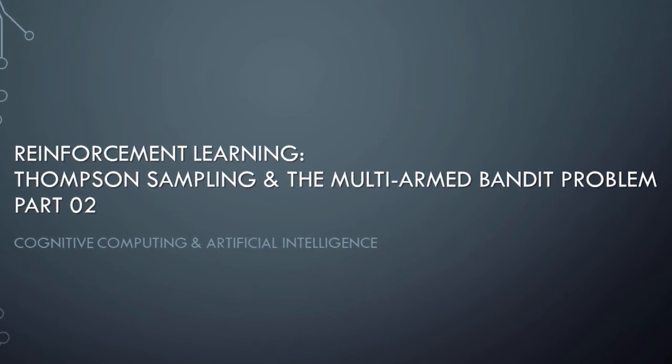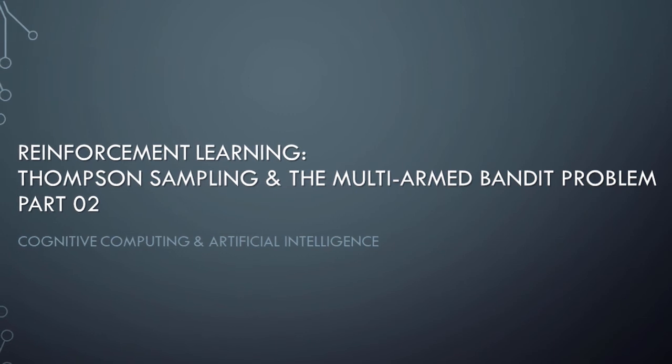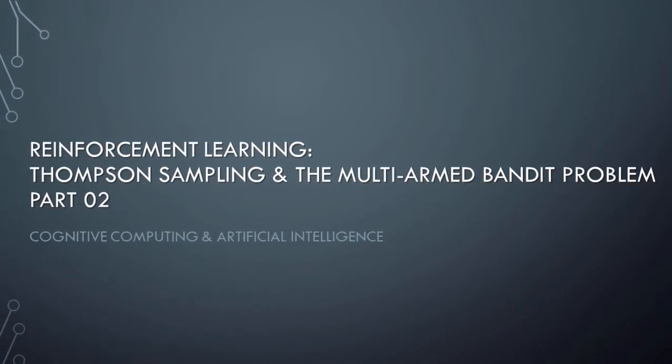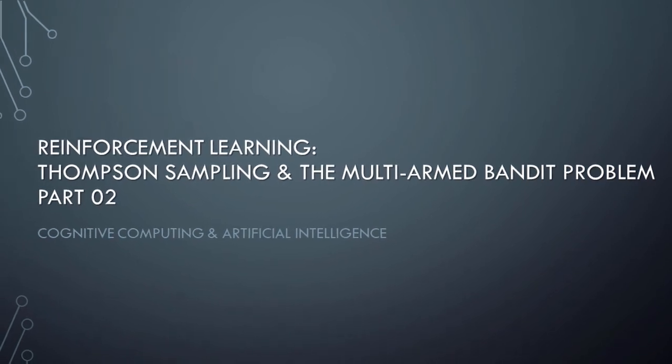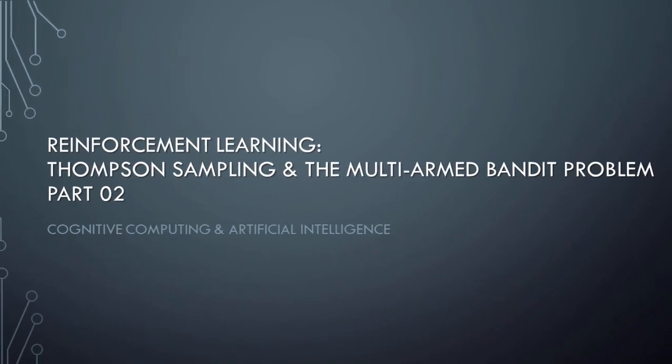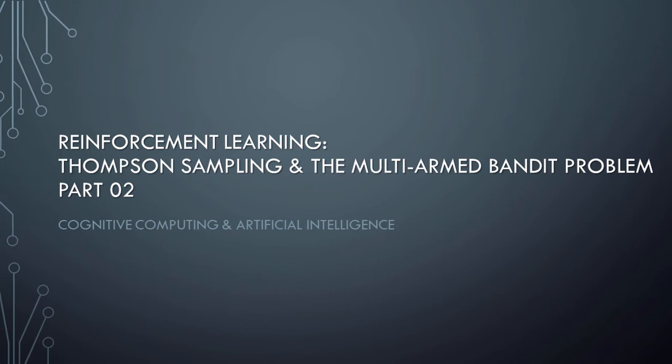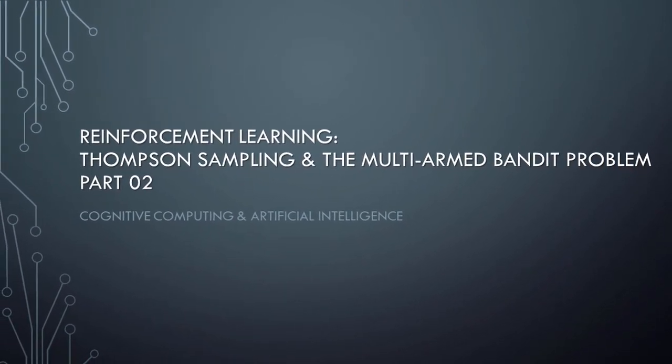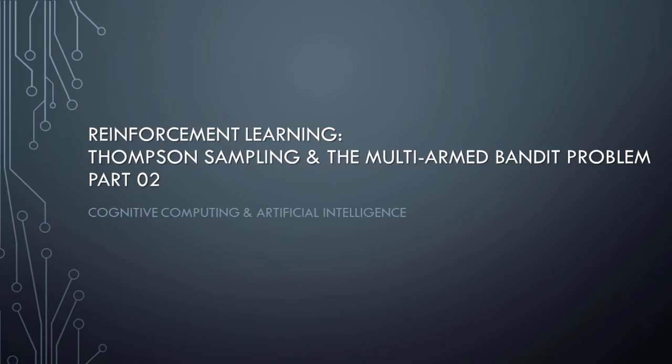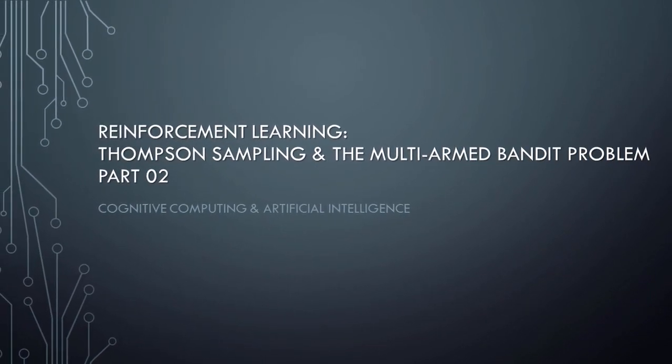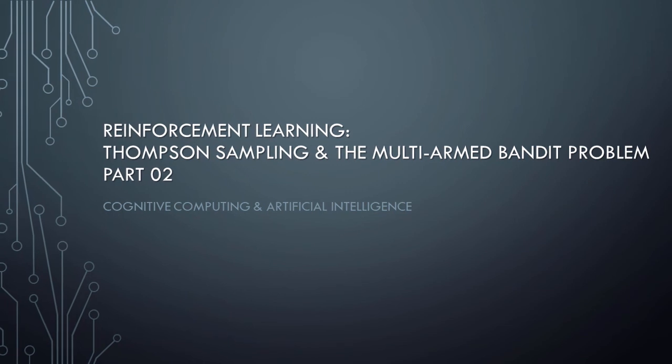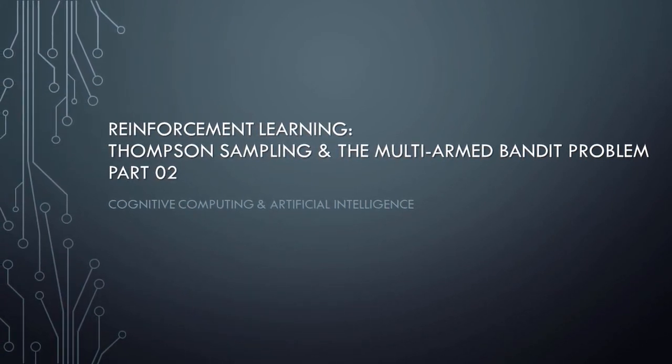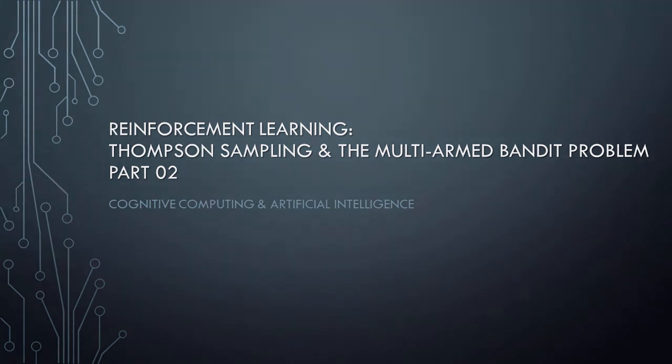In the next video in this series, we'll see a more sophisticated version of Thompson sampling-based reinforcement learning being applied to a complex advertising campaign. So, please join me for that video as well. Well my friends, thus ends part two of our lesson on reinforcement learning in the context of Thompson sampling and the famous multi-armed bandit problem. I hope that you learned something interesting in this lesson, and until next time, have a great day.